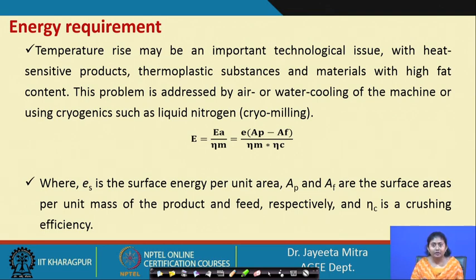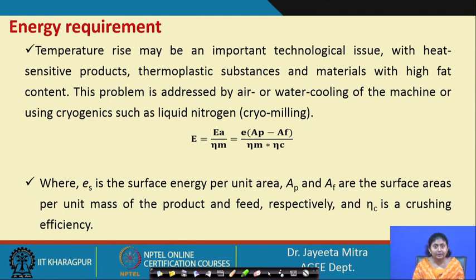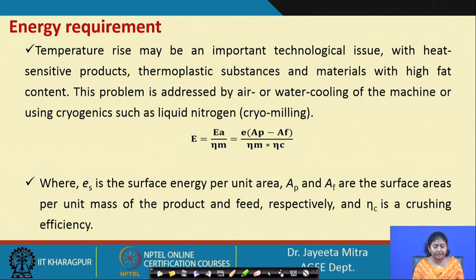This problem is addressed by air or water cooling, or using cryogenic approaches such as liquid nitrogen — known as cryo-milling. For example, in spice grinding, the cryogenic approach is used because spices have heat-sensitive components and antioxidants. To preserve these, we need a chilled environment, sometimes circulating liquid nitrogen to reduce the effect of temperature generation during size reduction.